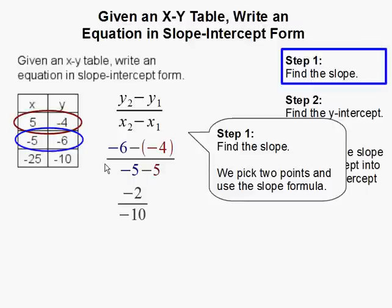Simplifying our expression, negative 6 minus negative 4 becomes plus positive. So negative 6 plus 4 is negative 2. Negative 5 minus 5 is negative 10. And that reduced to 1 fifth. And that is my slope right there.